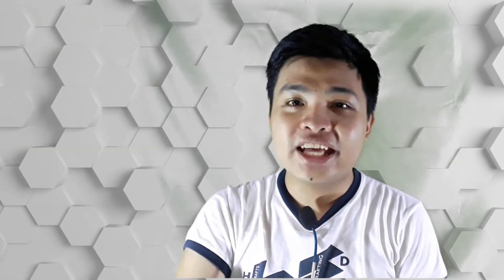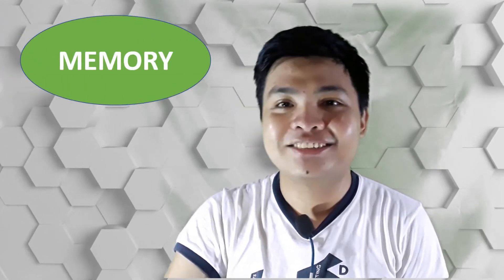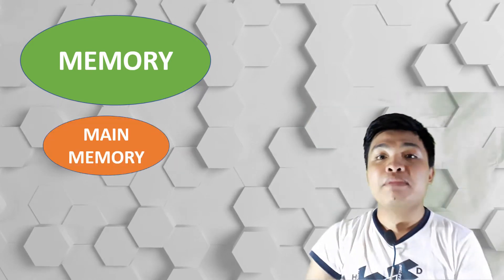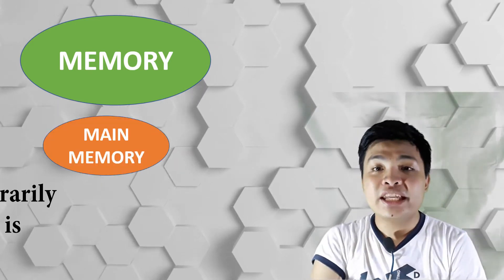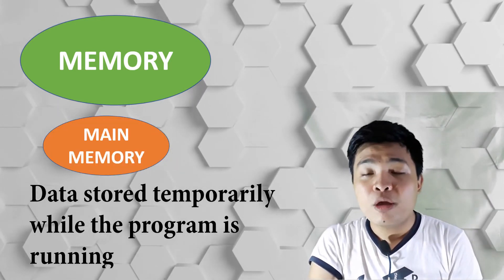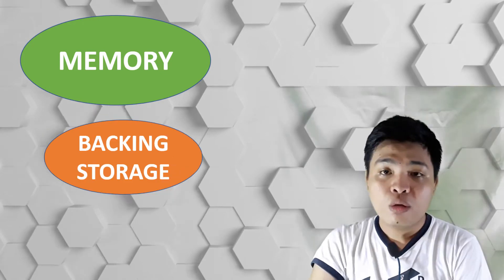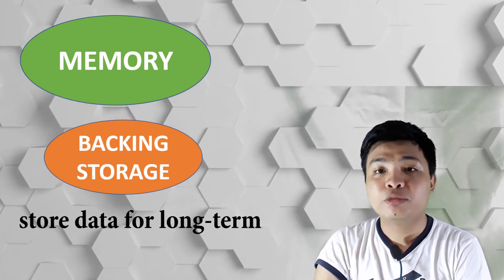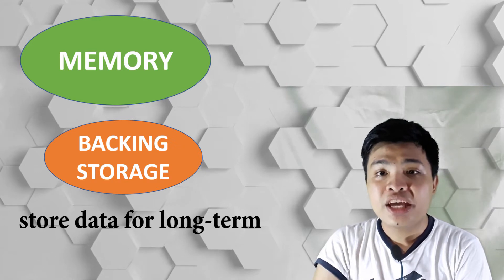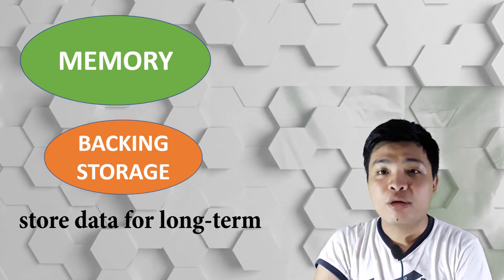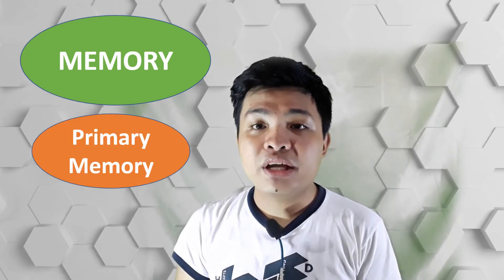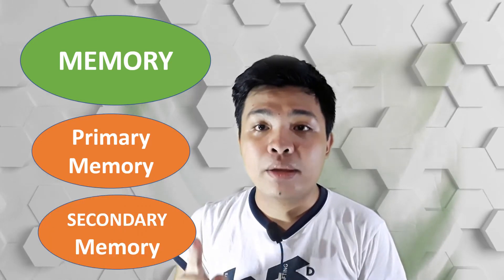Let's move on to the next component of the computer, which is memory. All computers need to store data. In main memory, data is stored temporarily while the program is running, while backing storage is used to store data long-term to preserve programs and data while not in use. In memory, we have two types: primary and secondary memory.